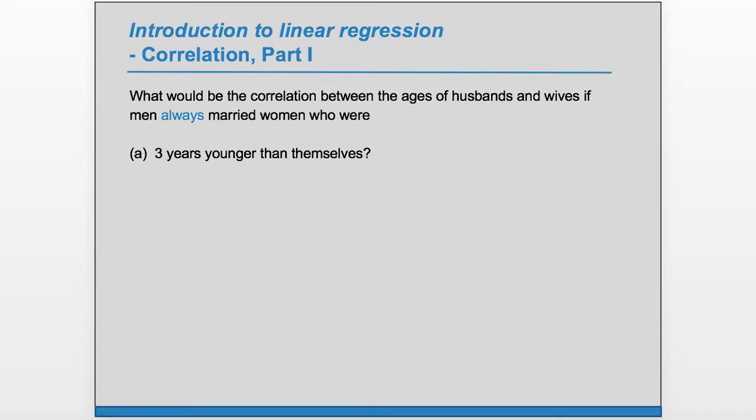So we have a perfect linear relationship, so we know r is going to be either positive one or negative one. When you hear this younger, it might make you think negative, but to see better what's going on, we can write out some of the pairs of data points. For example,